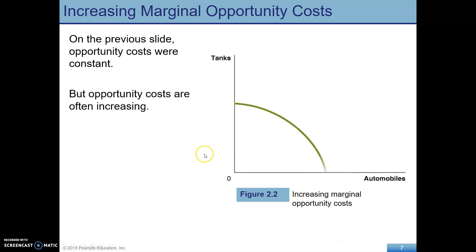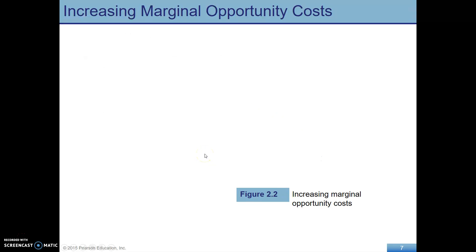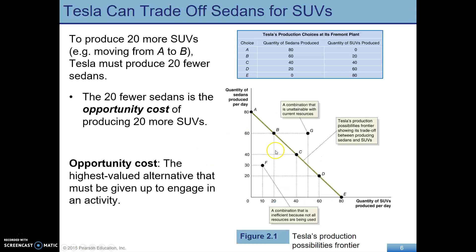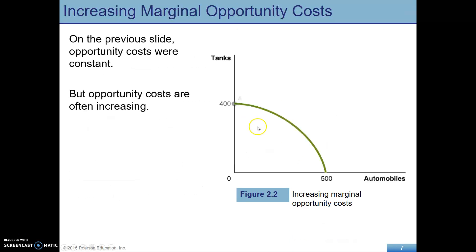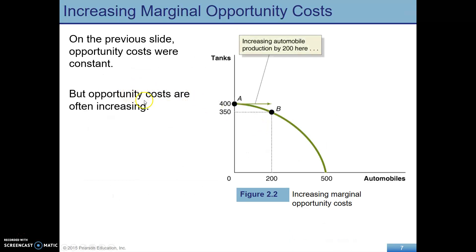On that last example, we had a linear PPF — just a straight line — so opportunity costs were constant. But opportunity costs aren't necessarily constant. In fact, typically the way we want to think about them is that they are increasing.